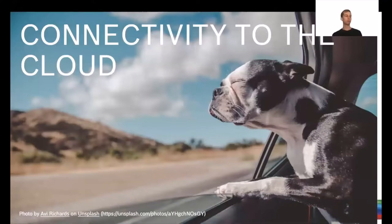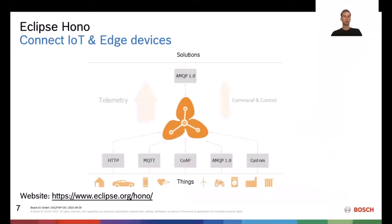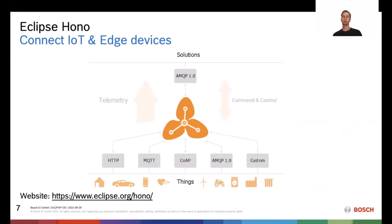Coming to the first step: connectivity to the cloud. One project I want to highlight is Eclipse Hono. The aim of Eclipse Hono is to handle a number of heterogeneous things that may speak different protocols — like HTTP, CoAP, or even a custom protocol — and connect them all to backend solutions by translating between protocols into AMQP 1.0. Your business solution then connects to Hono's northbound interface through AMQP 1.0.